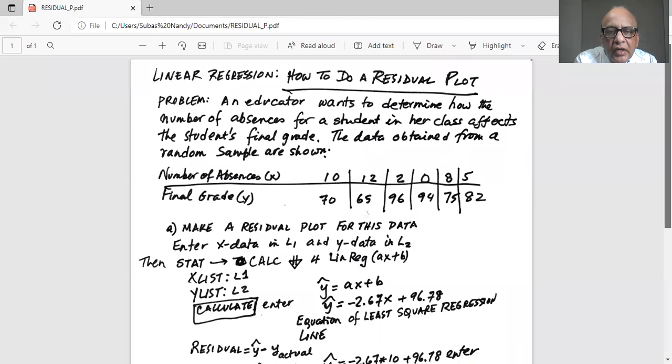So the problem is an educator wants to determine how the number of absences for a student in her class affects the student's final grade. The data obtained from a random sample are shown. Number of absences is X and final grade is Y.